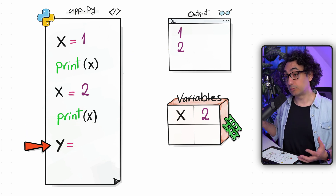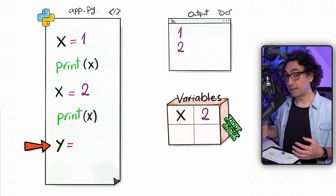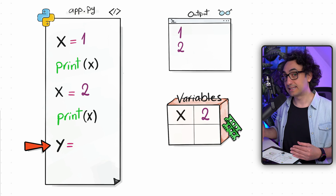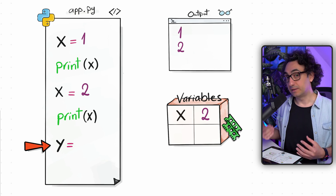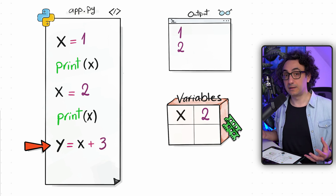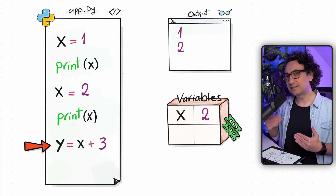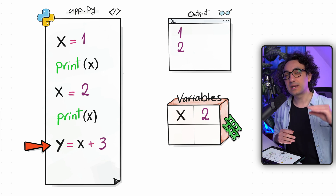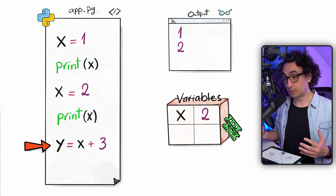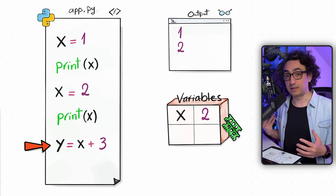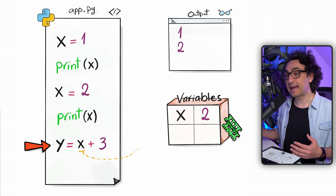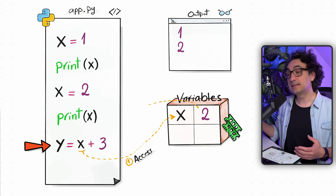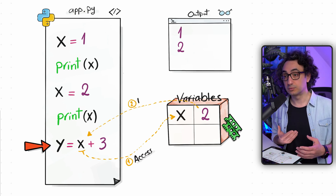The value of y will be the result of x plus three. When you execute it, Python cannot immediately create the variable y — first it has to do the calculation. To do that, it needs to find the value of x, so Python goes and accesses the variables, finds x, and reads its value back to your code — giving us two.